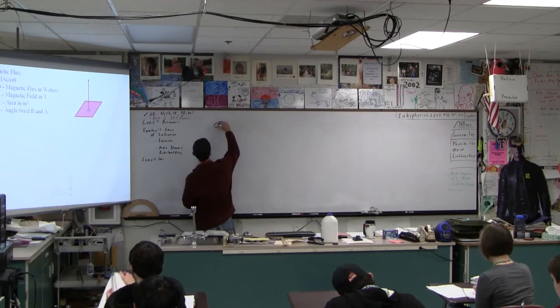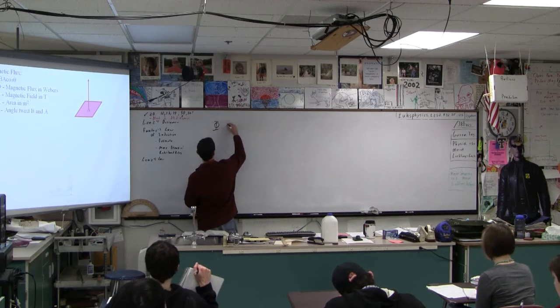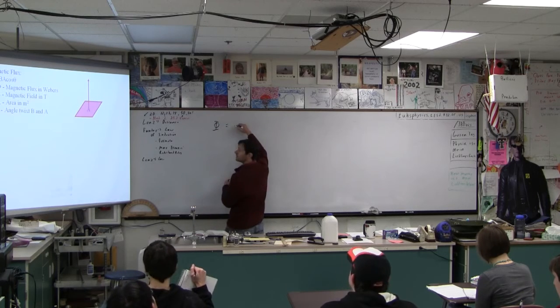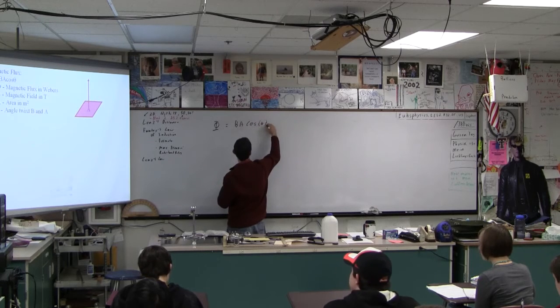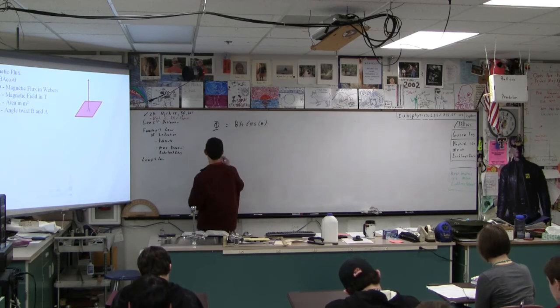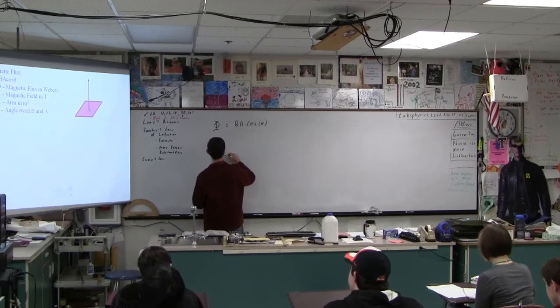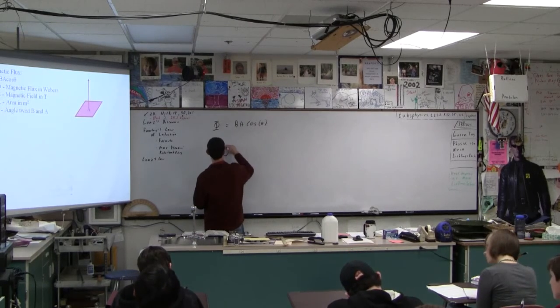And this symbol is, what is that symbol? Is that a phi? I don't know. Magnetic flux is B times A times the cosine of the angle. Guys, can we be quiet, please?